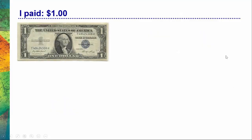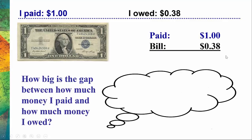Let's look at another simple example. Let's say I paid $1, but I only owed a bill of 38 cents. I'm going to ask myself, how big is the gap between how much money I paid and how much money I owed? It's kind of tough to see in my mind the difference between $1 and 38 cents. So I'm going to take 38 cents and round it up to something easier, like 40 cents. I can easily see the difference between 40 cents and $1 — it's 60 cents. But now I need to ask myself, how big was the difference between 38 cents and 40 cents? That's just another 2 cents. So I simply add up 60 cents and 2 cents, and the correct change they owe me is 62 cents. You can verify that with a calculator.